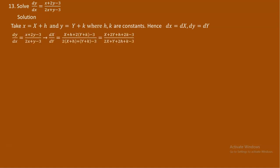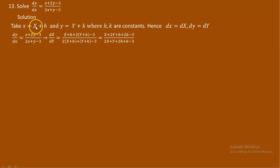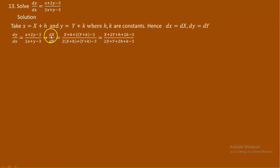Here is the question we have at the beginning: dy over dx equals (x plus 2y minus 3) over (2x plus y minus 3). Now, in place of dy over dx, as you take the ratio of these two, dy over dx is going to be d capital Y over d capital X.